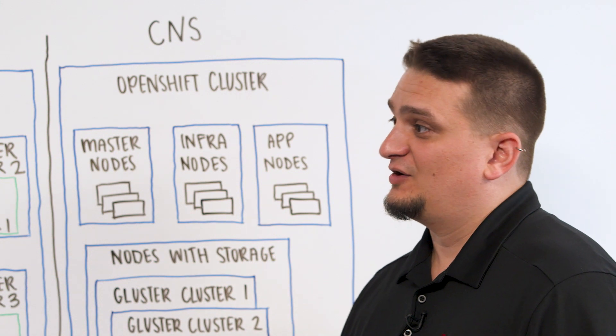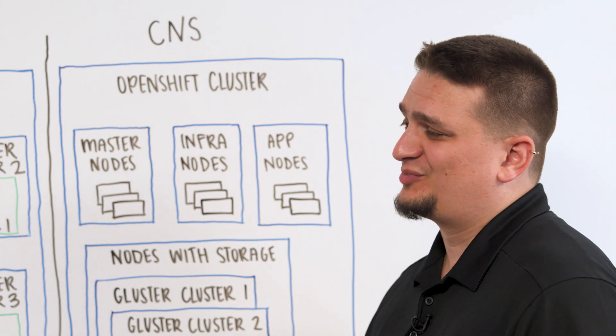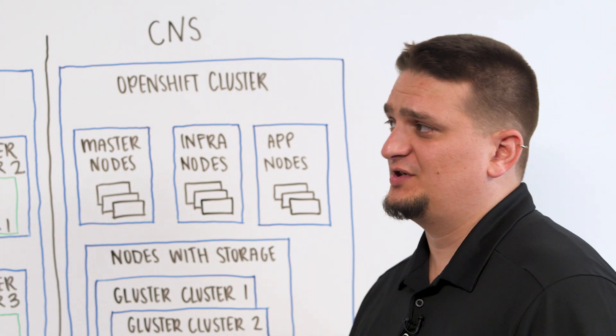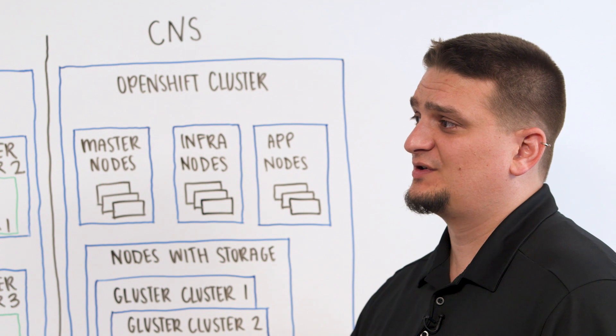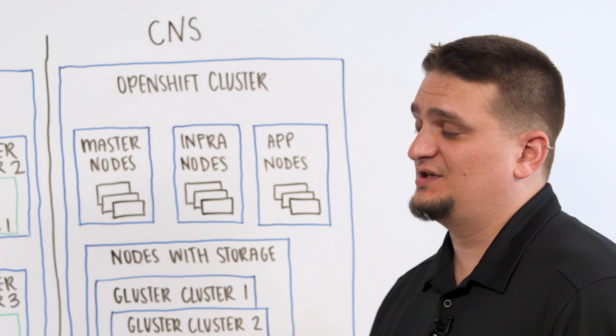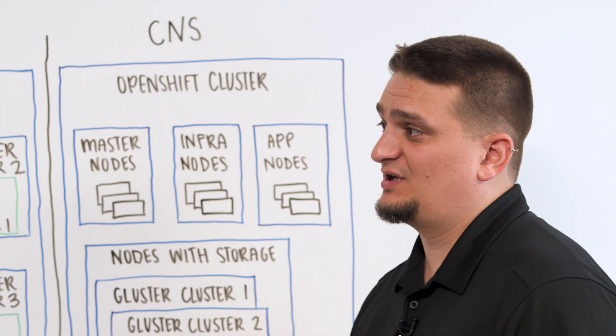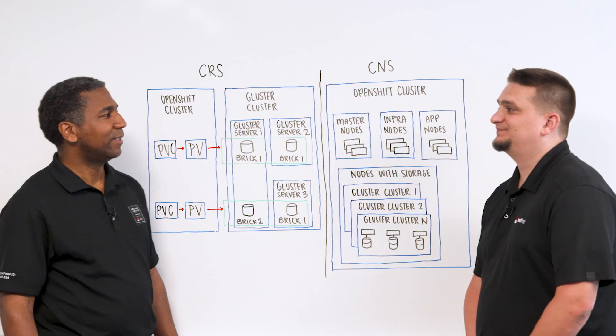In the OpenShift space, Gluster primarily comes in two different flavors: container-ready storage and container-native storage. Why don't you go ahead and talk about container-ready storage, and I'll take on container-native storage.